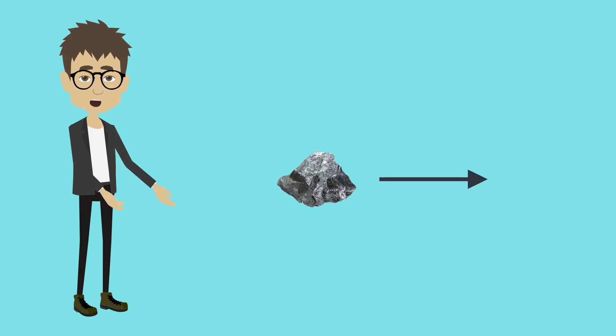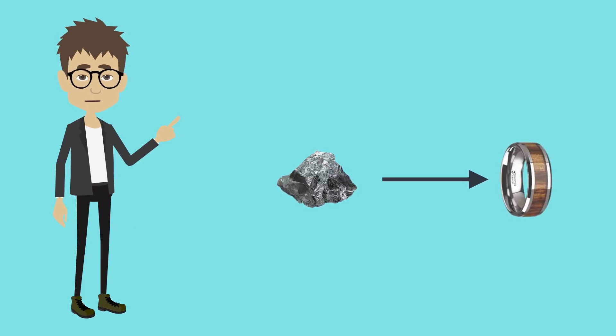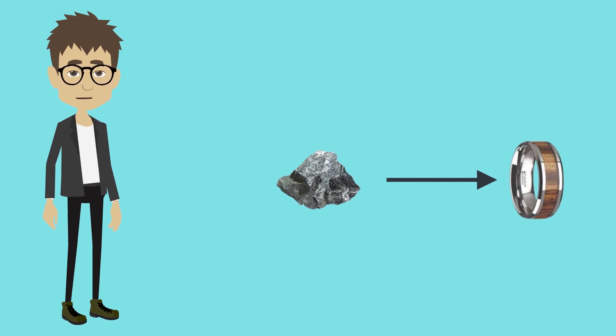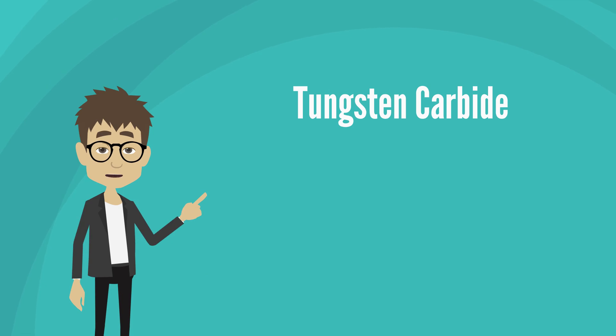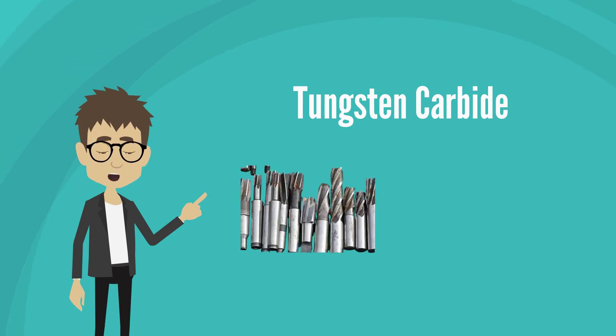Lastly, tungsten is used to create tungsten carbide, which is so hard that it is the only material that can scratch a diamond. This makes tungsten carbide the ideal material to use for steel cutting and rock drilling in the civil and mining industry.